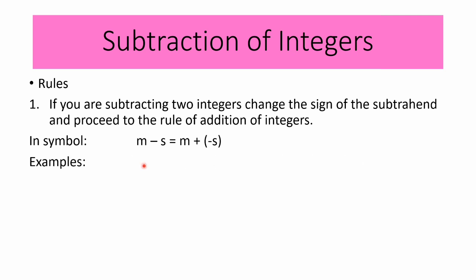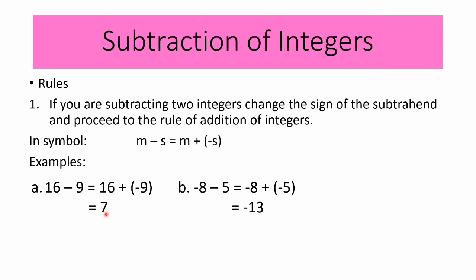For example letter A: 16 minus 9. Copy the minuend, which is 16, change the subtraction symbol to a plus sign, and get the opposite of 9, which is negative 9. Then following the rule for addition of integers, 16 plus negative 9 equals 7. Therefore, 16 minus 9 is 7.